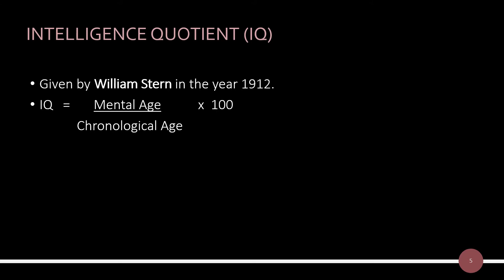The intelligence quotient is equal to a person's mental age divided by chronological age, multiplied by 100. Mental age refers to an individual's level of mental development as compared to others.